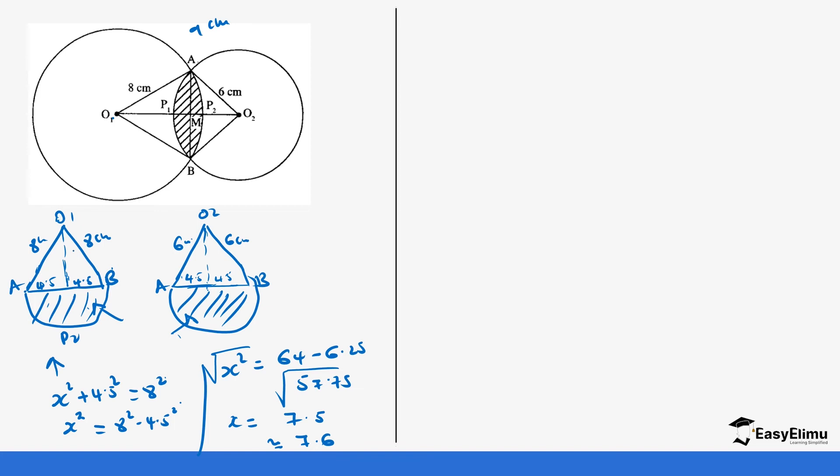So we got the height for the first triangle on the first sector. Let's do the same for the second one, which is going to be x squared plus 4.5 squared equals 6 squared. This is the same as x squared equals 6 squared minus 4.5 squared, which gives us 36 minus 6.25. So 36 minus 6.25 gives us 29.75, so x equals the square root of 29.75, which gives us 5.5.